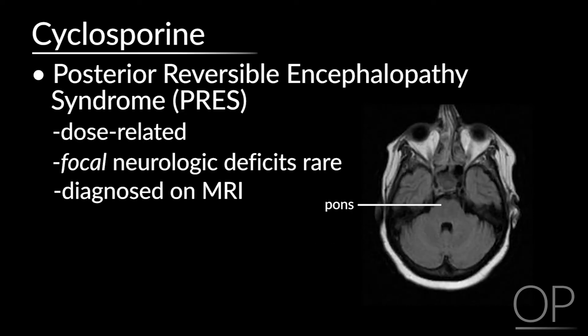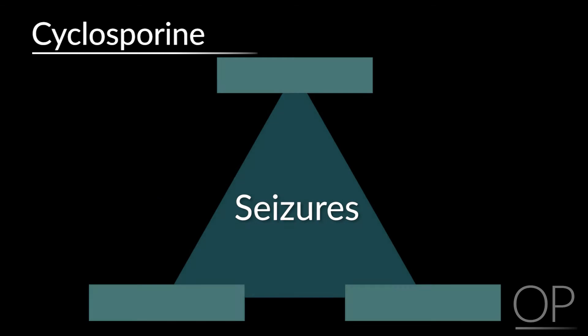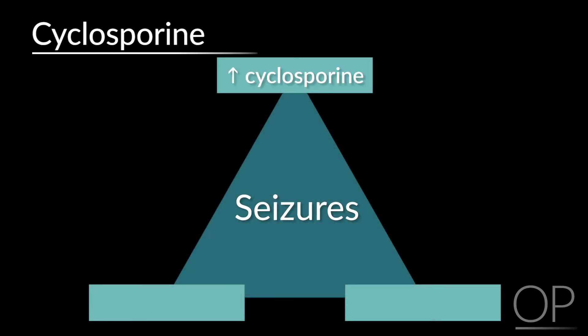This is a representative MRI showing white changes in the cortical and subcortical areas — bilateral and diffuse, as opposed to focal lesions. If you saw focality, one should be thinking of a hemorrhagic or infectious process. The seizures associated with cyclosporine often progress from ataxia and decreased mental status, although these early signs can be missed. There is a triad of high cyclosporine levels, low magnesium, and hypertension that usually leads to seizures.